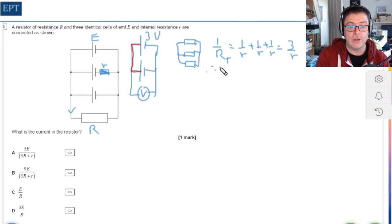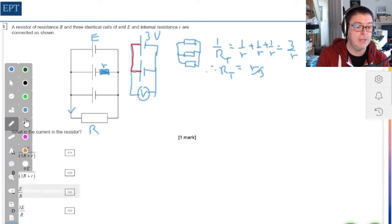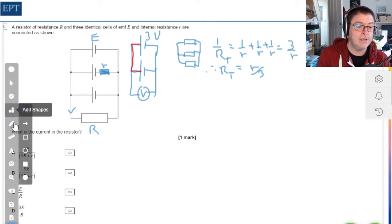Therefore, the R total is effectively going to be little r over three. In other words, we have now worked out that the total internal resistance in our circuit is simply just going to be r over three, and the total EMF remains at E.